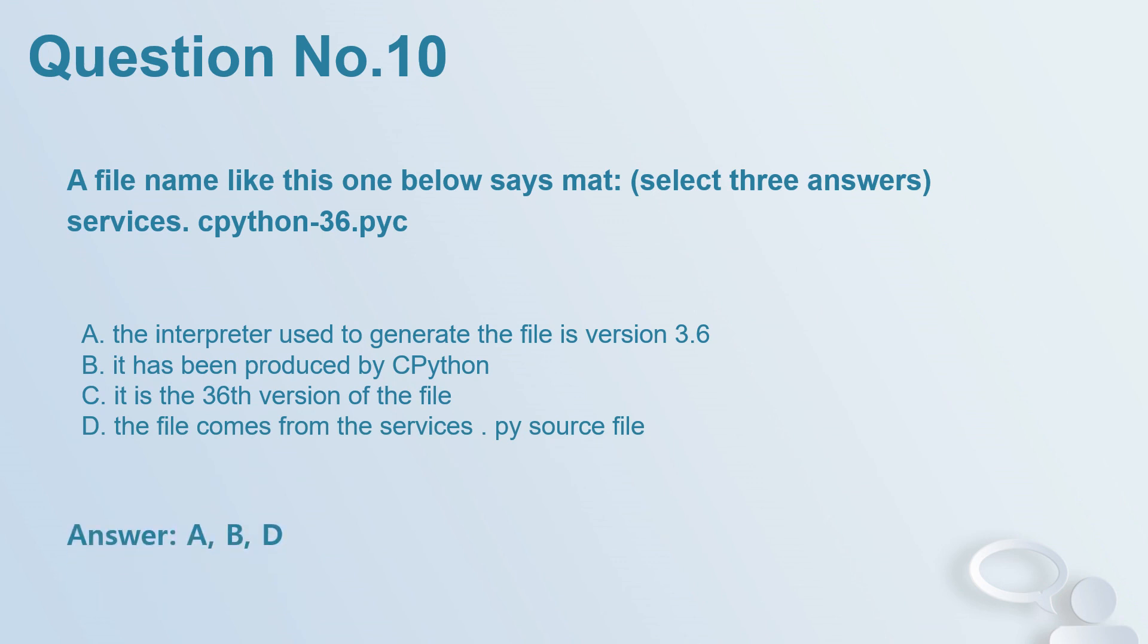Question number 10. A filename like this one below says what? Select three answers. services.cpython-36.pyc. A. The interpreter used to generate the file is version 3.6. B. It has been produced by CPython. C. It is the 36th version of the file. D. The file comes from the services.py source file. Answer: A, B, D.